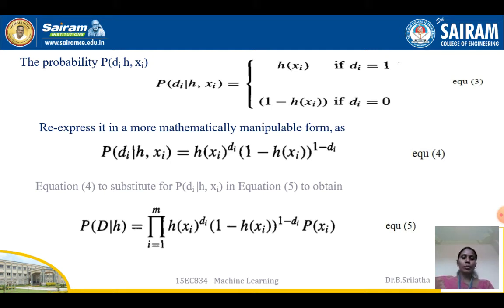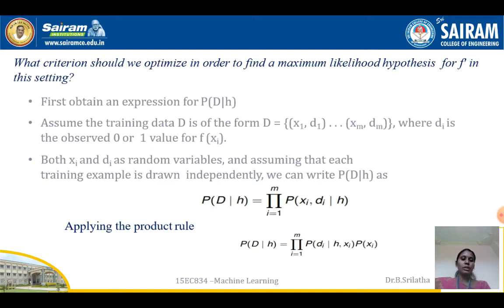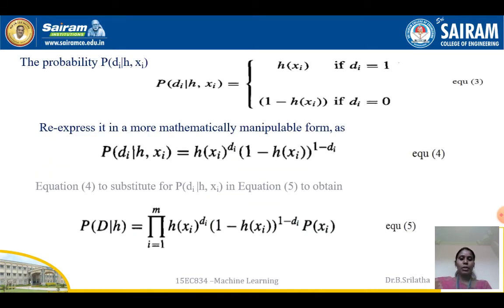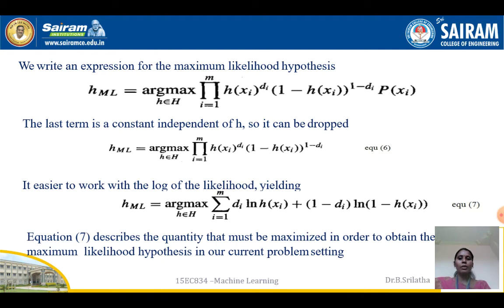Substituting equation 4 into the expression for P(D|h), we obtain equation 5: P(D|h) = product from i=1 to m of [h(xi)^di * (1 - h(xi))^(1 - di)] * P(xi). Here, P(di | h, xi) is replaced using the probability function we derived.